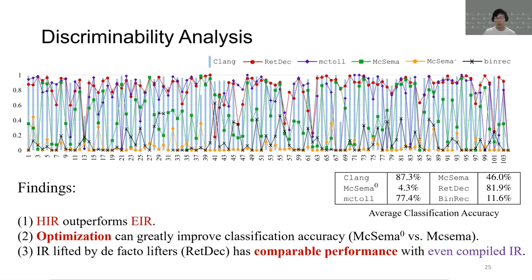For discriminability analysis, we find that HIR generally outperforms EIR, and optimization can significantly improve classification accuracy. Also, IR lifted by HIR lifters, like Reddeck and McToe, has comparable performance with even compiled IR.